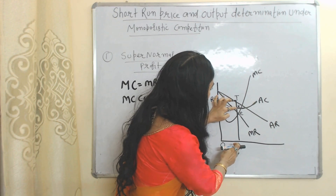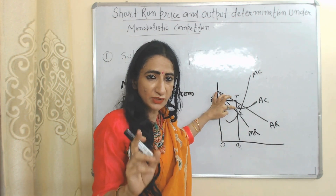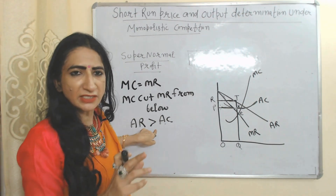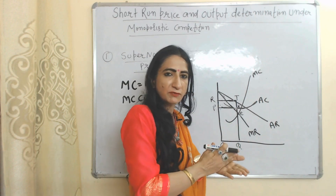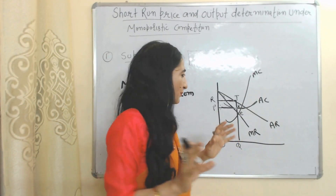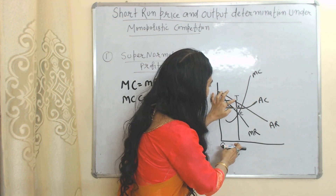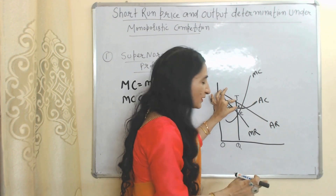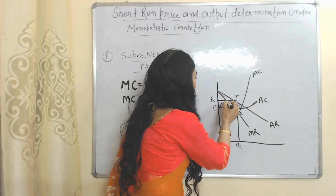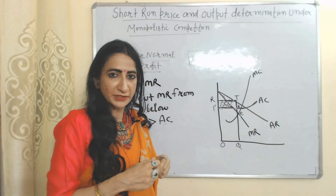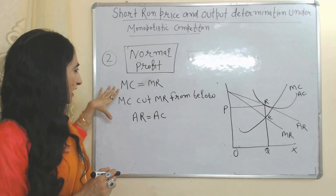Now we will see the third condition. TQ is our average revenue, KQ is our average cost. TQ is more than KQ, that means average revenue is more than average cost, so our third condition of super normal profit is also satisfied. Difference between average revenue and average cost is per unit super normal profit — TK will be called per unit super normal profit, and this whole area TRTK will be called total super normal profit under monopolistic competition during the short time period.